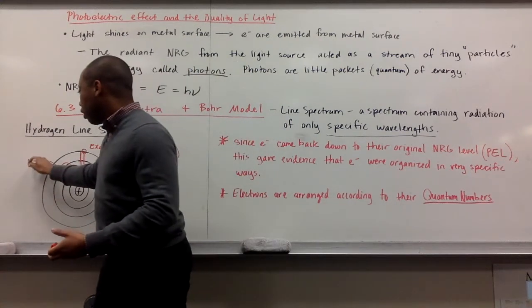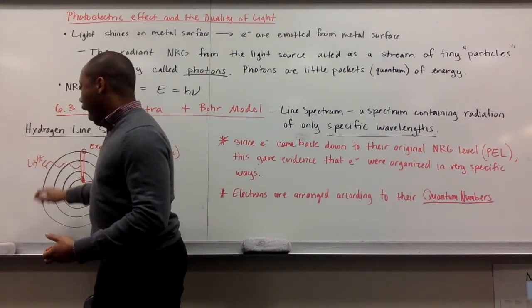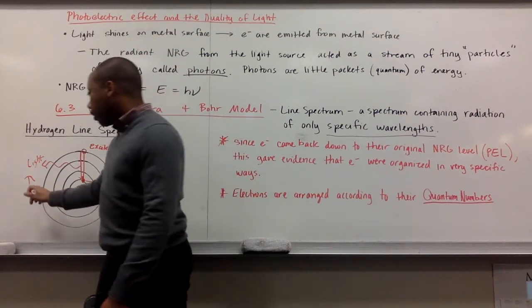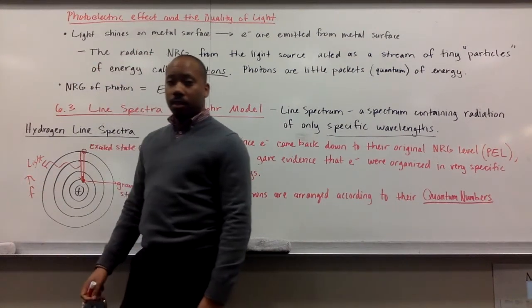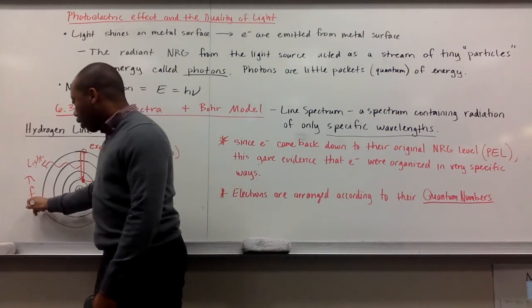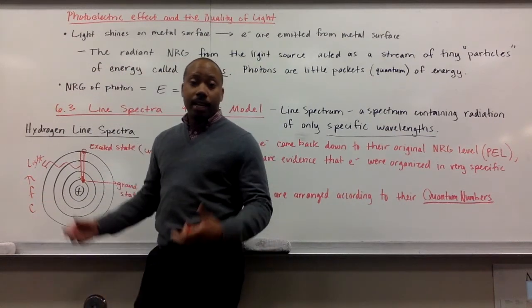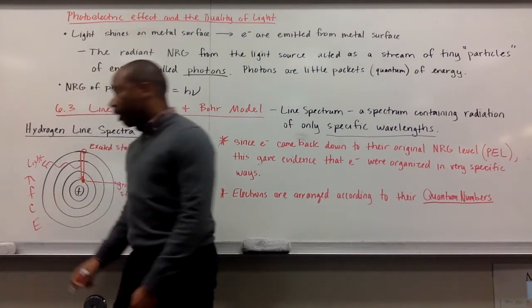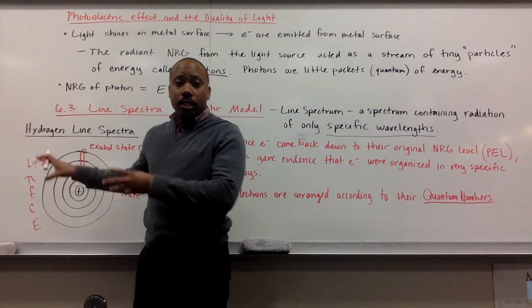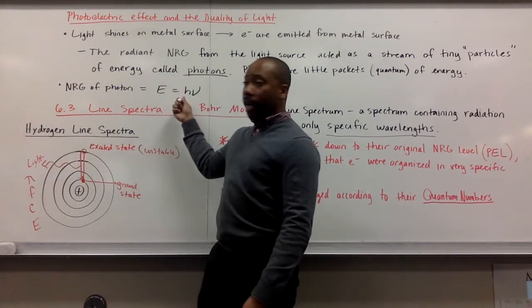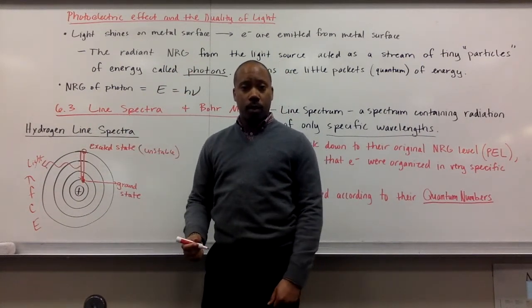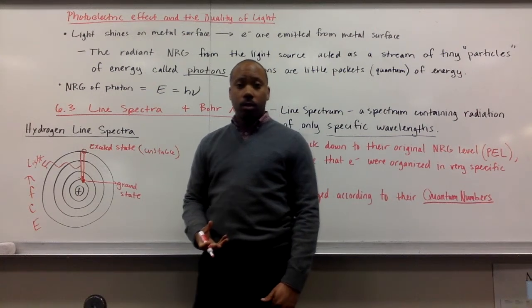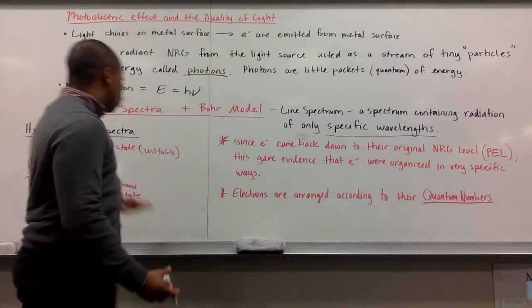This light had a certain wavelength, and having a certain wavelength means it had a certain frequency. Because it's light, it traveled at the speed of light. Given that it had a frequency, it must also have an energy associated with it. So that ties together this equation with the one from our first board - the speed of light equals frequency times wavelength.